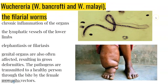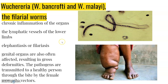Wuchereria bancrofti and Wuchereria malayi are filarial worms that cause a slowly developing chronic inflammation of the organs in which they live for many years. They usually affect the lymphatic vessels of the lower limbs, and the disease is called elephantiasis or filariasis. The genital organs are also often affected, resulting in gross deformities. The pathogens are transmitted to a healthy person through the bite of a female Anopheles mosquito.